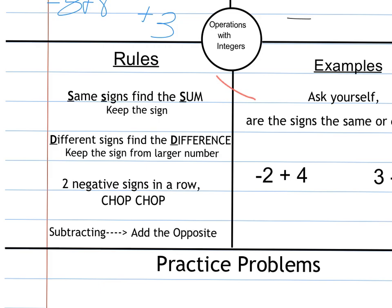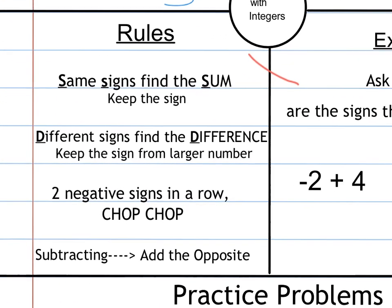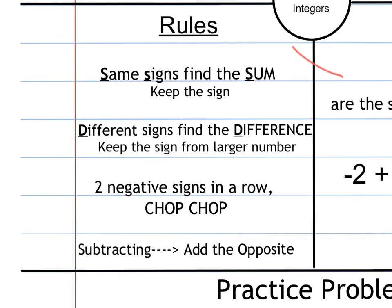Some rules for addition and subtraction. You're going to want to write these down and get them recorded. When the signs are the same, this is for when you're adding. When the signs are the same, you're going to find the sum and keep the sign. When there's different signs when you're adding, if you have a positive and a negative, you're going to keep the sign of the larger number, meaning the absolute value of that number, and you're going to find the difference of them.